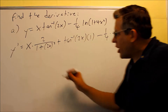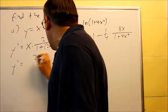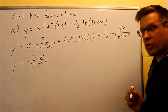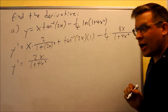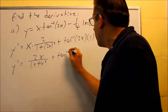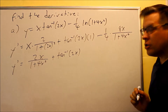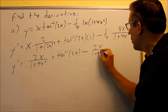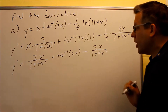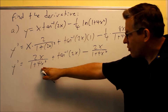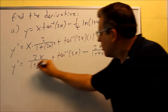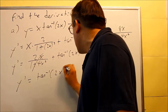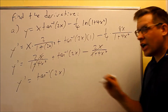Now we do some simplifying. Y prime has 2x on top multiplied by 1 plus 4x squared on the bottom — squaring both things on the inside. This term we just leave as inverse tangent of 2x. Then we have a minus, and this one we can reduce to 2x over 1 plus 4x squared. We notice that this first term and that first term cancel, which is nice. So those cancel out, and the final answer for part a is inverse tangent of 2x.